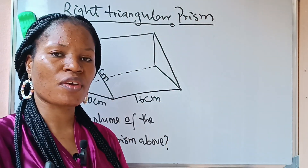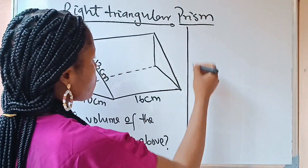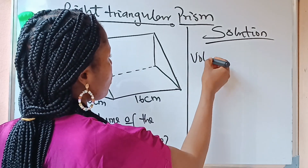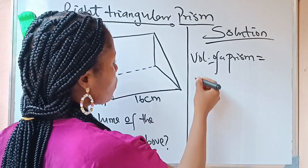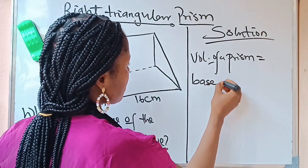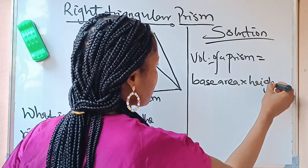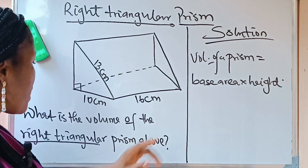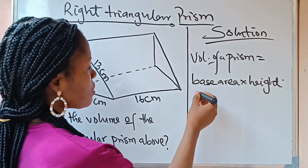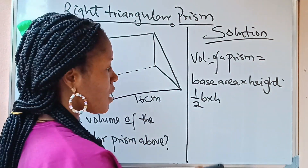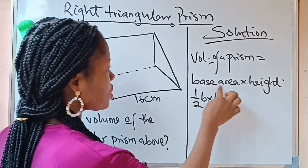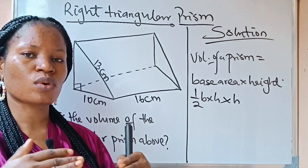When you have a prism, the formula for finding the volume is: volume of a prism equals the area of the base times the height. Now the base is the right triangle, and the area of any triangle is half base times height. That height refers to the height of the triangle, not the prism. So half base times height gives us the area of the base.